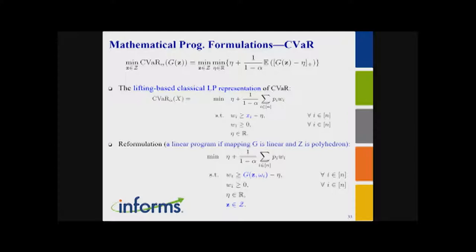CVaR is just a modified risk-neutral model — if you look at it, it's somehow just a weighted expectation. When doing multistage decomposition, this is a modified risk-neutral formulation, so we have many papers incorporating CVaR into multistage stochastic models using classical nested Benders or SDDP-type algorithms. You have the decision, then the future — instead of expectation, you put CVaR there, and it has the nested structure like in dynamic programming.